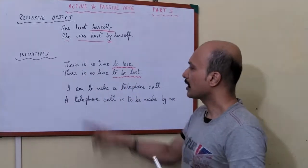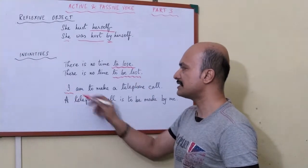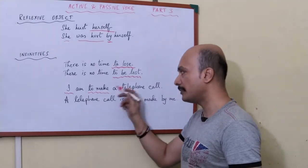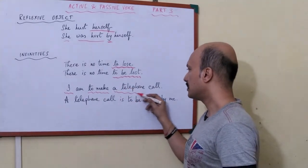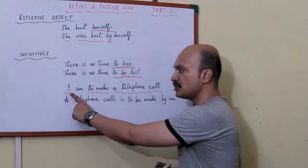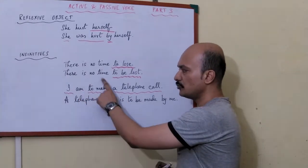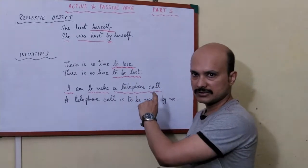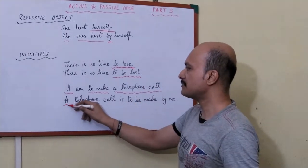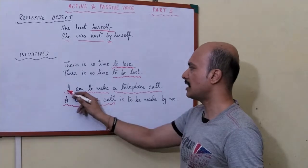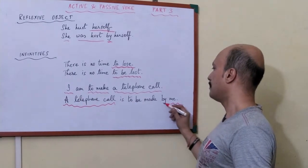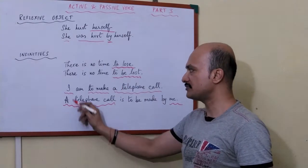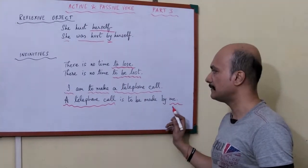Let's see the second sentence: 'I am to make a telephone call.' The subject is 'I'. 'To make' is the infinitive — this is our main word. 'A telephone call' is the object. The object 'a telephone call' comes into the subject position. The subject 'I' moves to the object part as 'by me'.